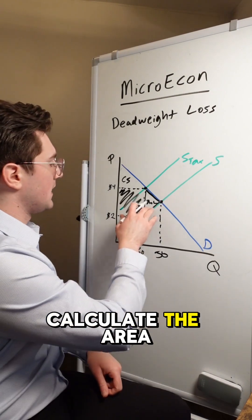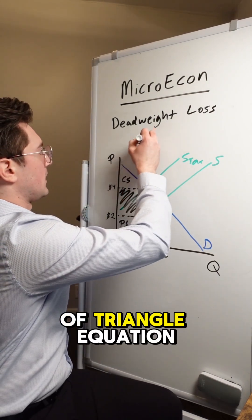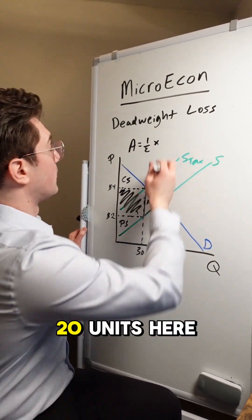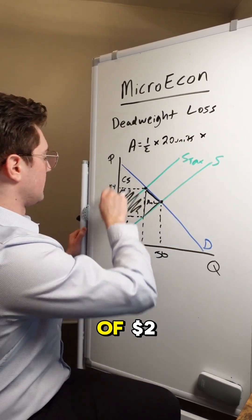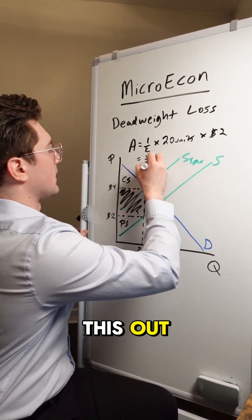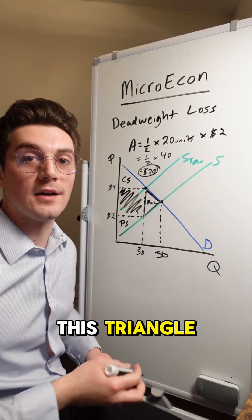So with this, we're able to calculate the area of this triangle with the area of triangle equation. One half times the base of 20 units here times the height of $2. When we solve this out, we get a deadweight loss of $20 in this triangle.